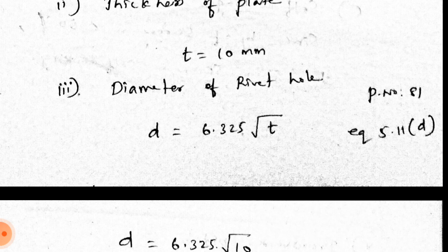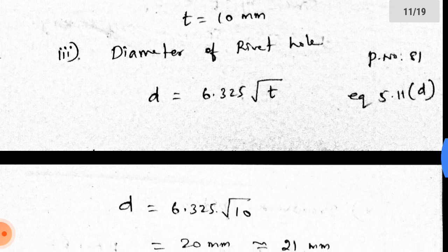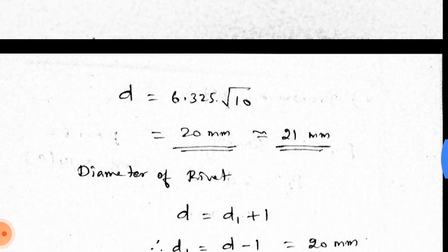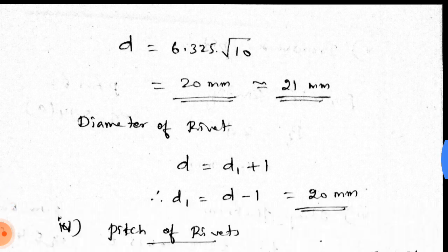The third step is the diameter of the rivet hole. The formula for the rivet hole diameter is d = 6.325 × √t, from page 81, equation 5.11d. Substituting t = 10, we get the diameter of the rivet hole as 21 mm.